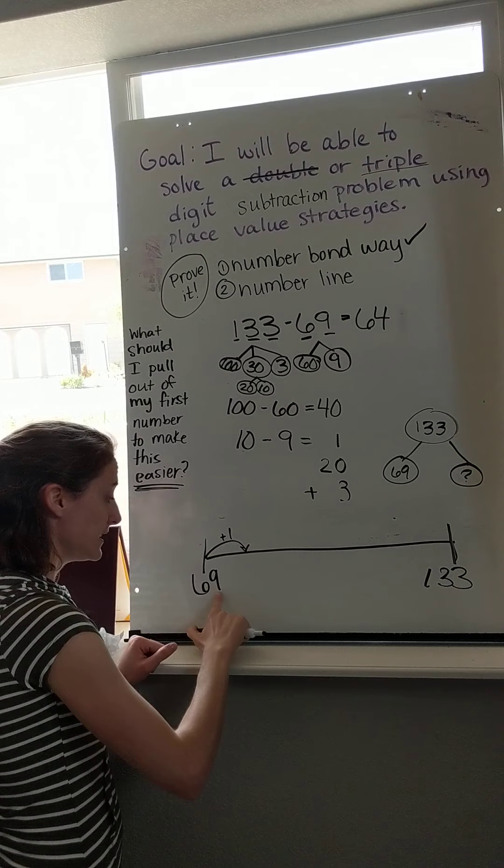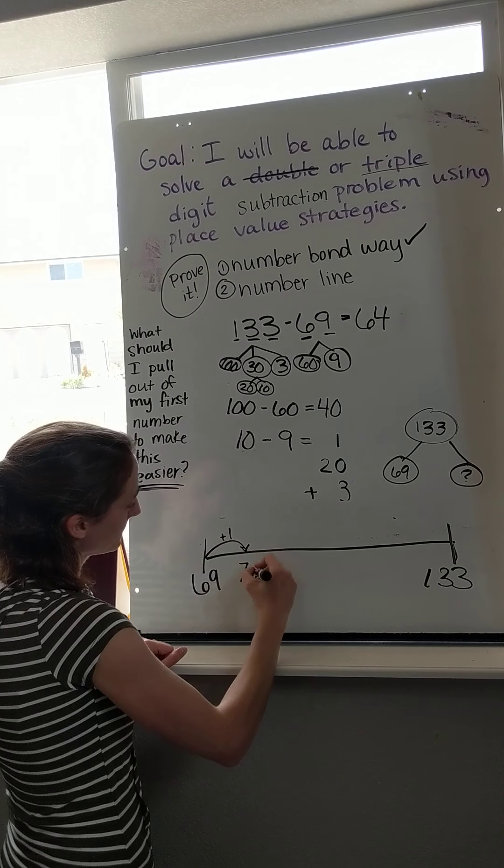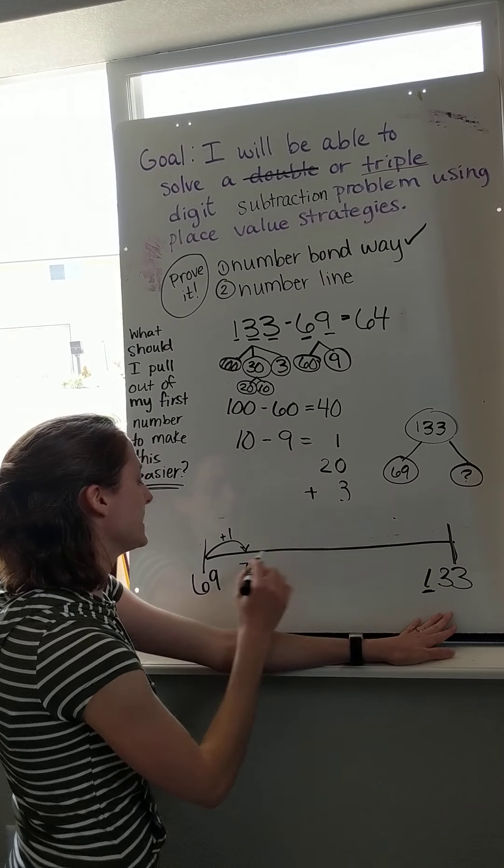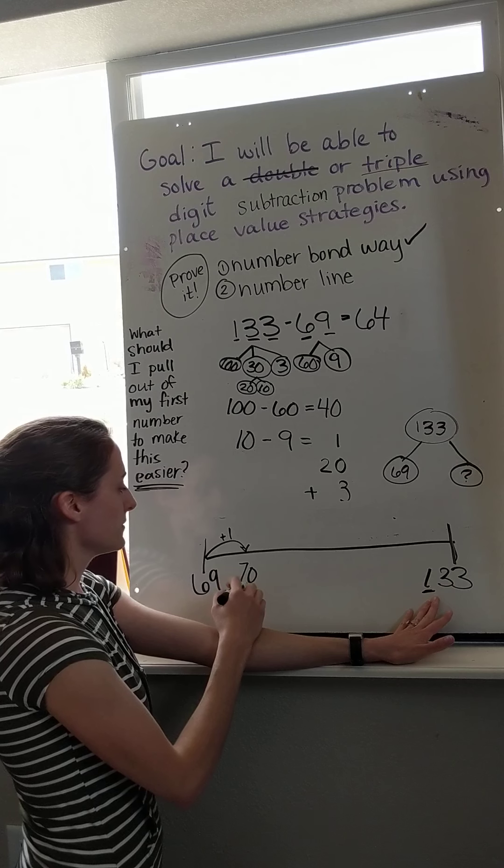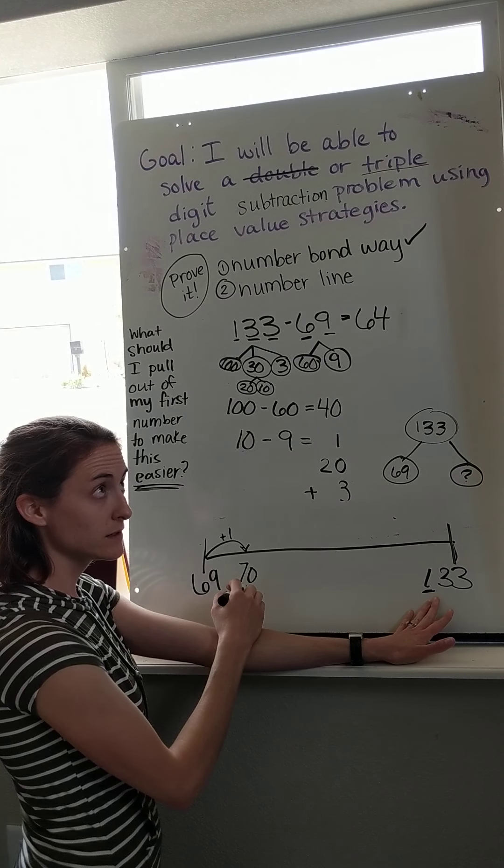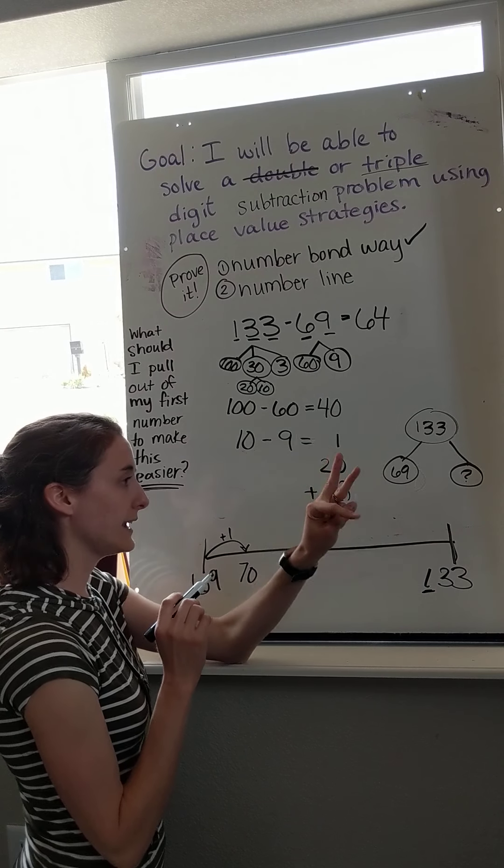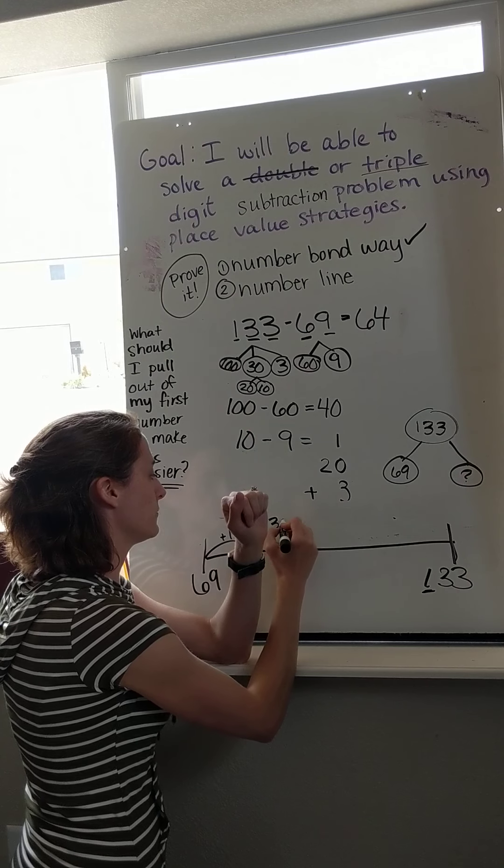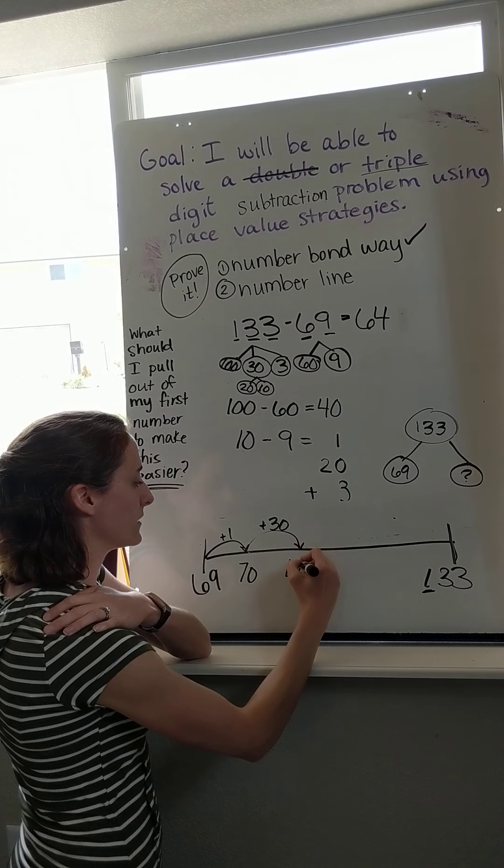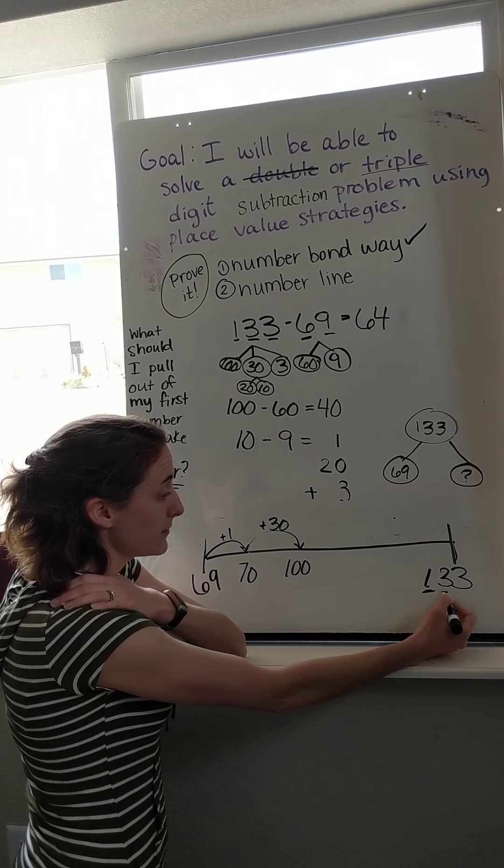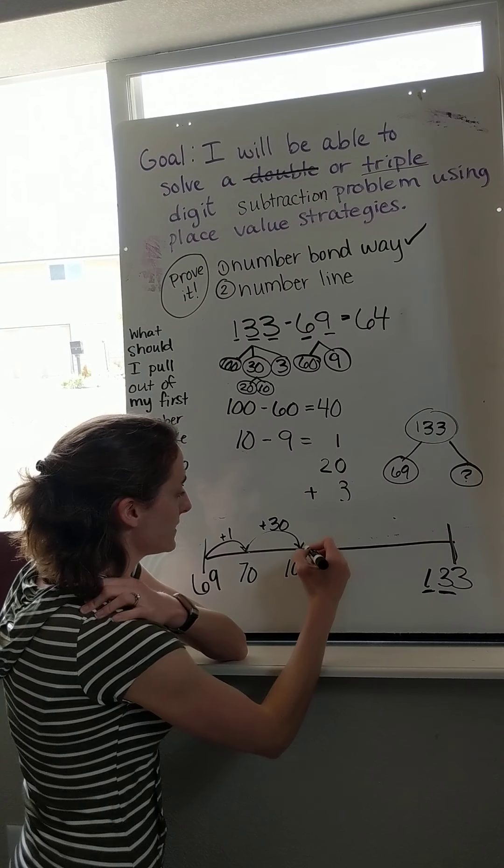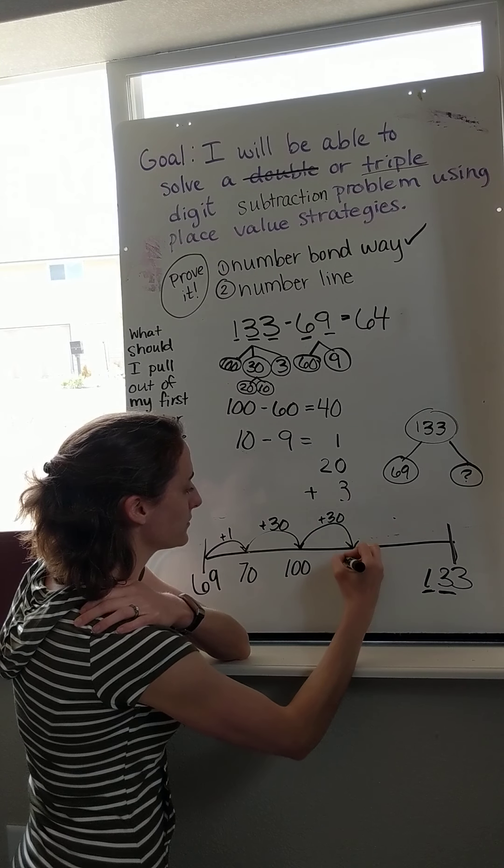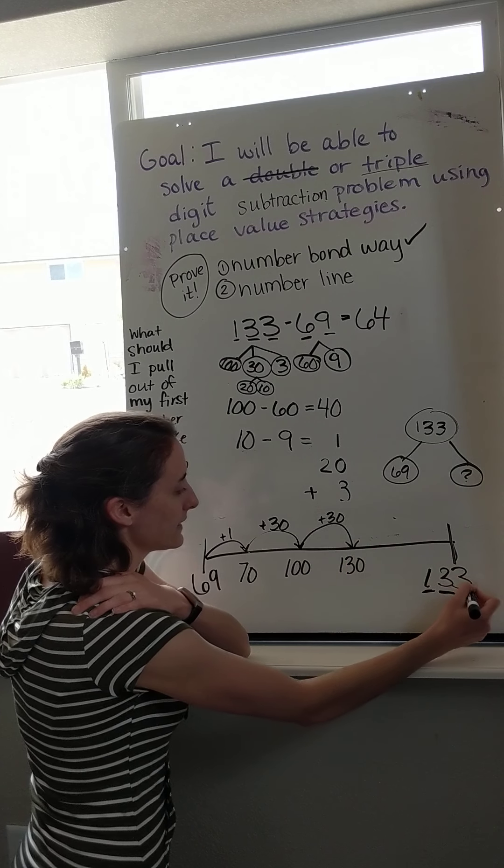Why? Because 69 plus 1 more makes a friendly number. That makes 70. I want to get all the way up to 100. Right now I only have 70. How do I get to 100 from 70? Well, 7 tens plus 3 more makes 100. So 70, 80, 90, 100. I need 3 tens, which is the number 30. So 70 plus 30 is 100. Oh, now that's super friendly. Because now I know I just need to add 3 more tens. Again, that's 30.